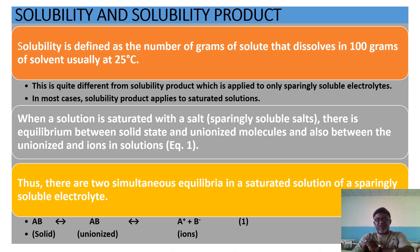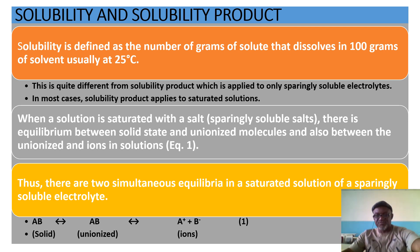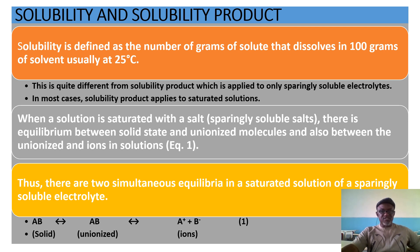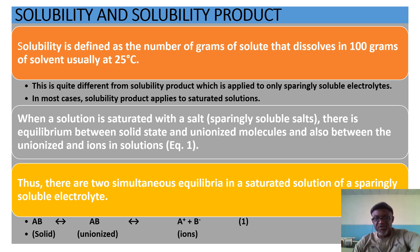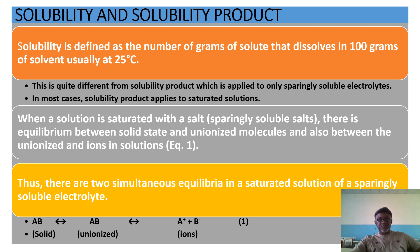Solubility is defined as the number of grams of solid that dissolves in 100 grams of solvent, usually at 25°C. We are emphasizing on temperature — if you use warm water you observe that it dissolves more of your solid, like milk. But if it is cold water, sometimes the milk will not dissolve at all. So if you increase the temperature above 25°C it will dissolve more. That is the simple definition of solubility.